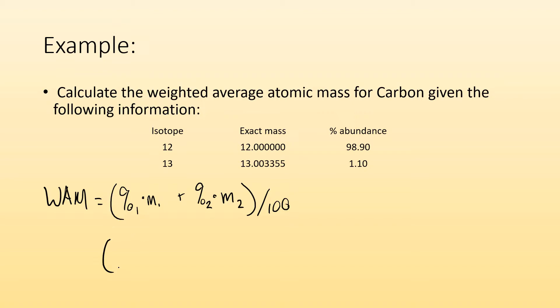So when I do that, I go, all right, I got 98.90 percent times the mass, which is exactly 12.00. I'm not going to write all those out because I'm lazy and you know they're there plus 1.10 percent times 13.003355. And then divide by 100.